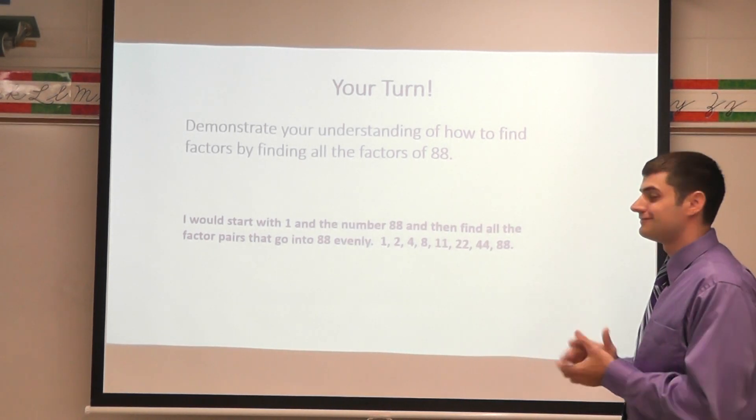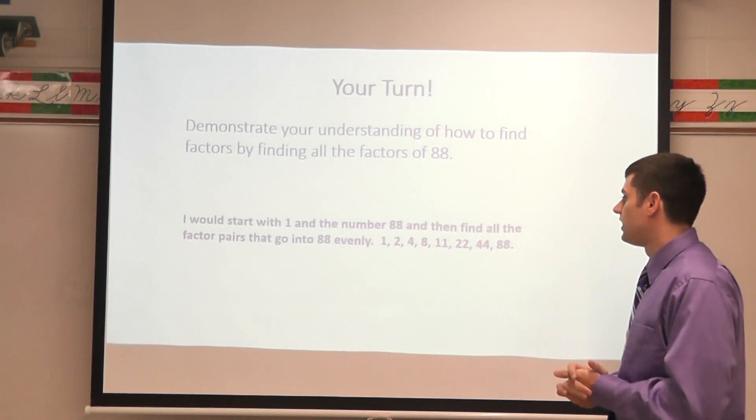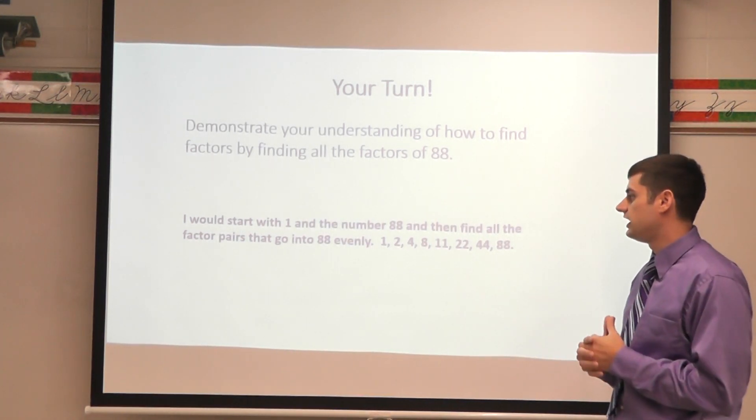Wouldn't you have liked if I gave you a prime number? It'd be real easy, you know, like 13. 1 and 13 and you're done. But I made you work a little bit. So I'm going to start with 1 and 88 because 1 times 88 gives you 88.